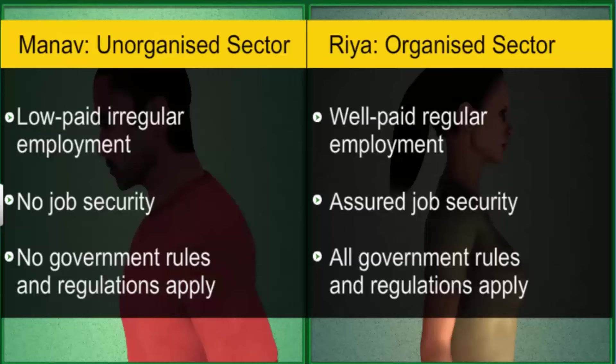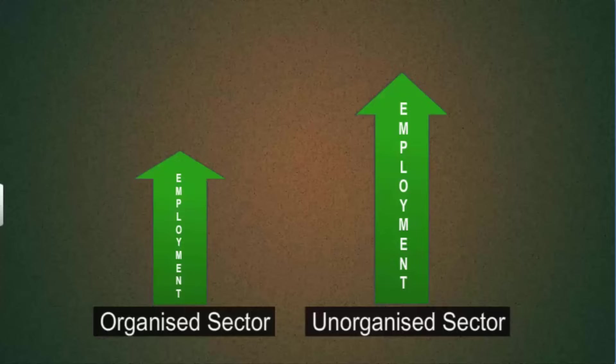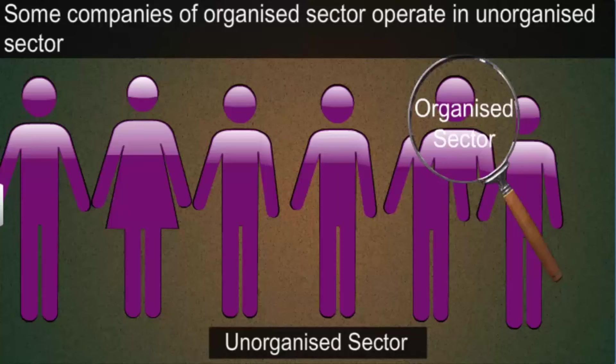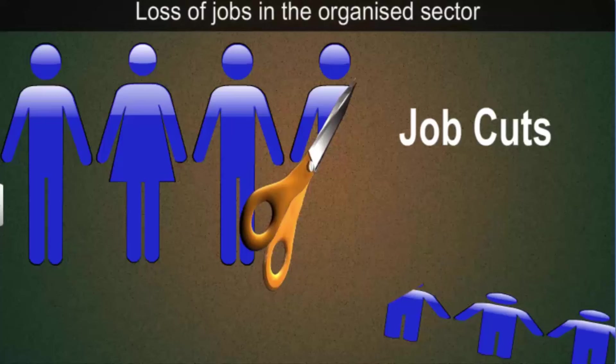When the organized sector offers better employment conditions, why do people work in the unorganized sector? Some companies from the organized sector operate in the unorganized sector to save taxes and to avoid giving employees their due benefits. Since the 1990s, many people employed in the organized sector have lost their jobs and been forced to take up employment in the unorganized sector.